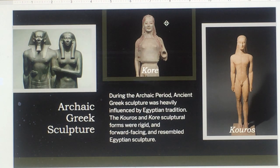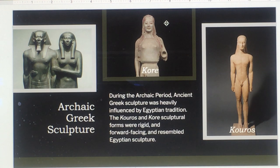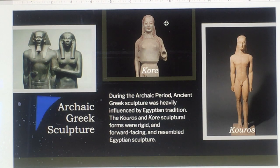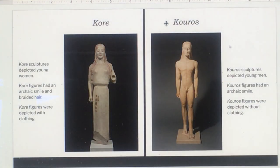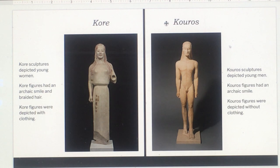During the Archaic period, ancient Greek sculpture was heavily influenced by Egyptian tradition. The kouros and kore sculptural forms were rigid and forward-facing and resembled Egyptian sculpture. Kore sculptures depicted young women with an archaic smile, braided hair, and clothing.